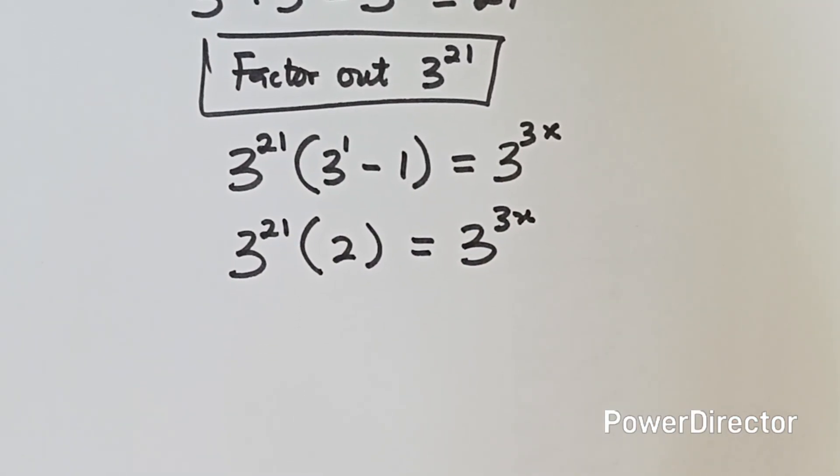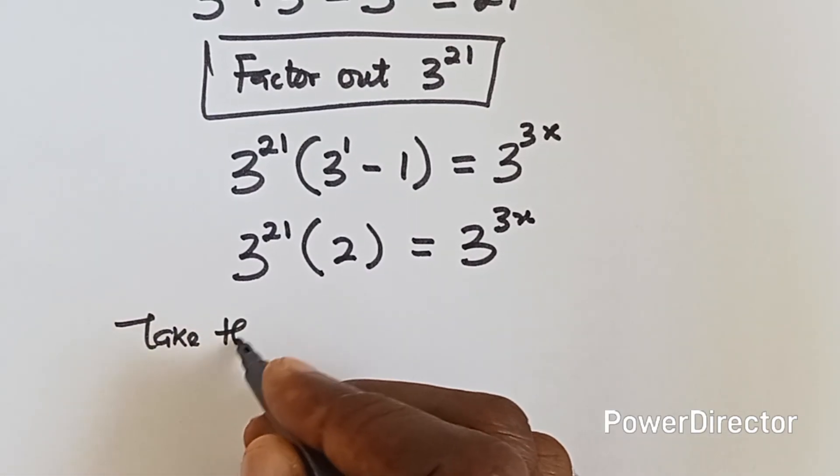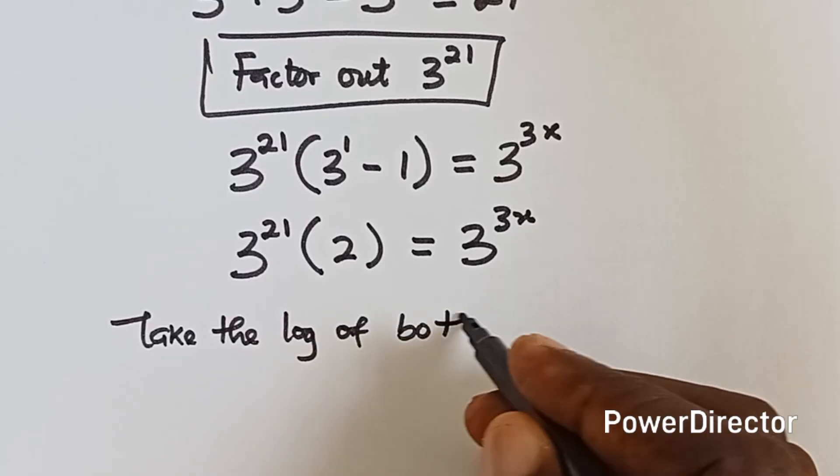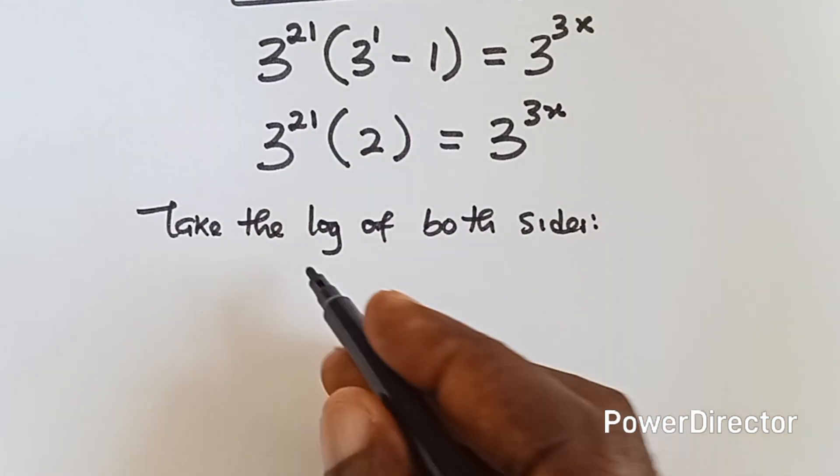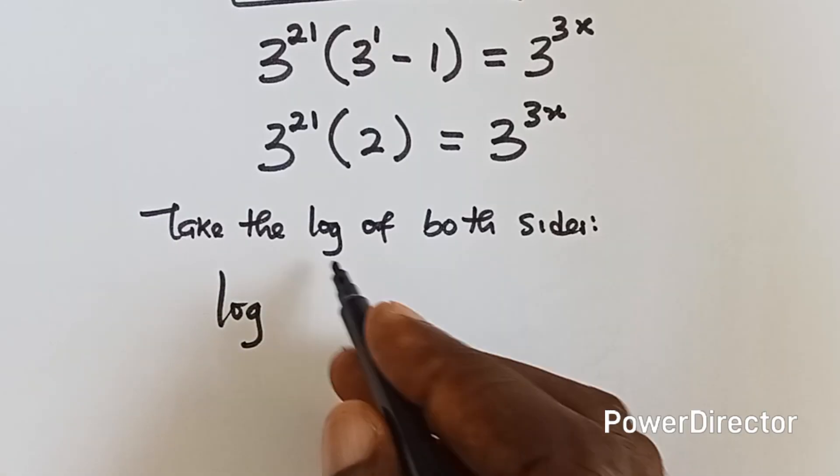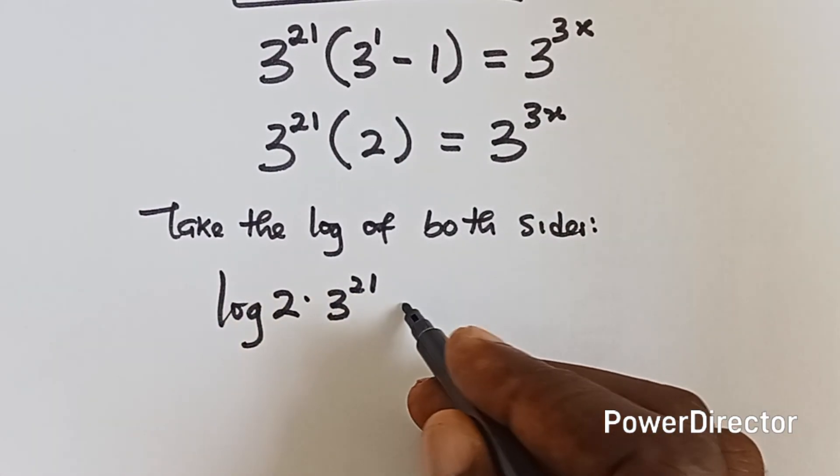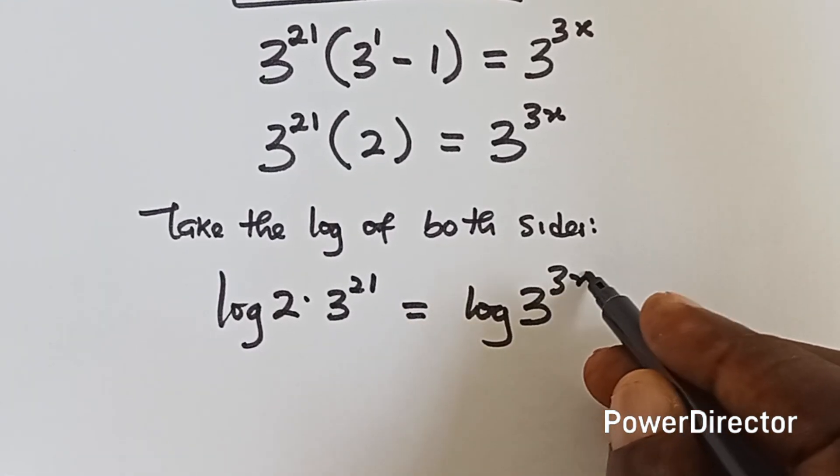From here, we can take the logarithm of both sides. Okay, let me write that. Take the logarithm of both sides. Okay, when we take logarithm of both sides, this is what we have. We have log 2 multiplying 3 raised to power 21 equals to log 3 raised to power 3x.